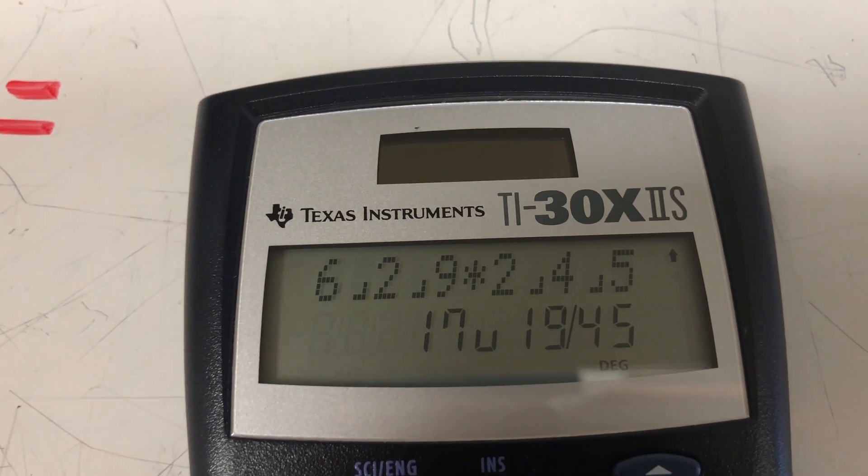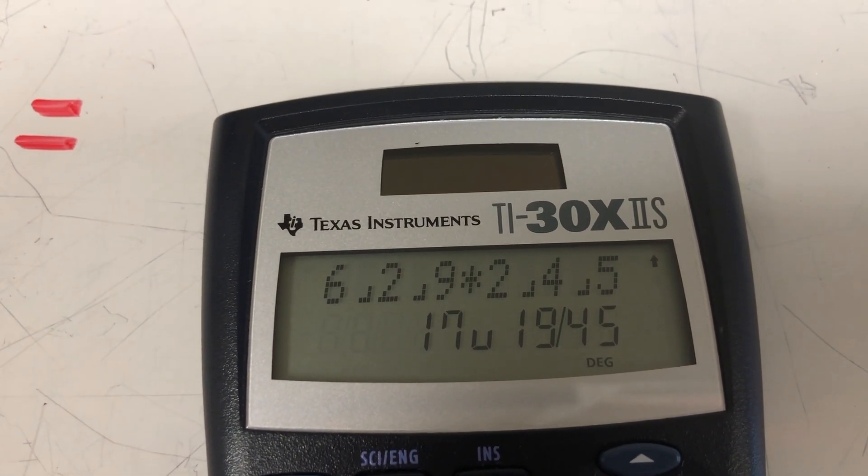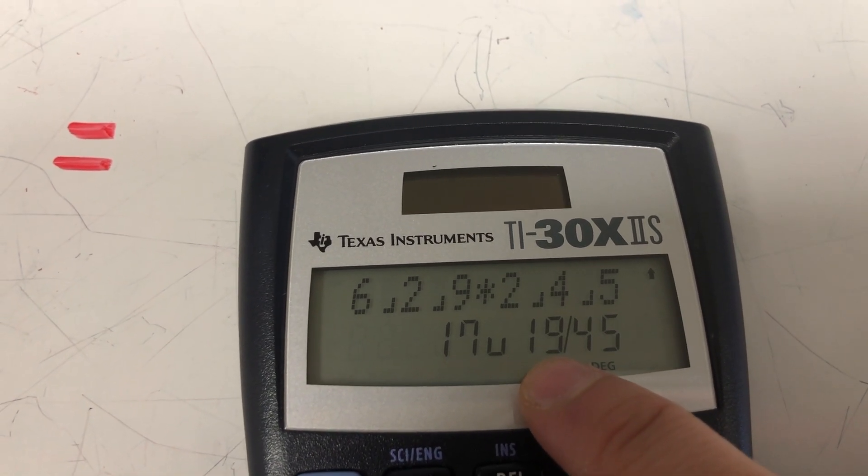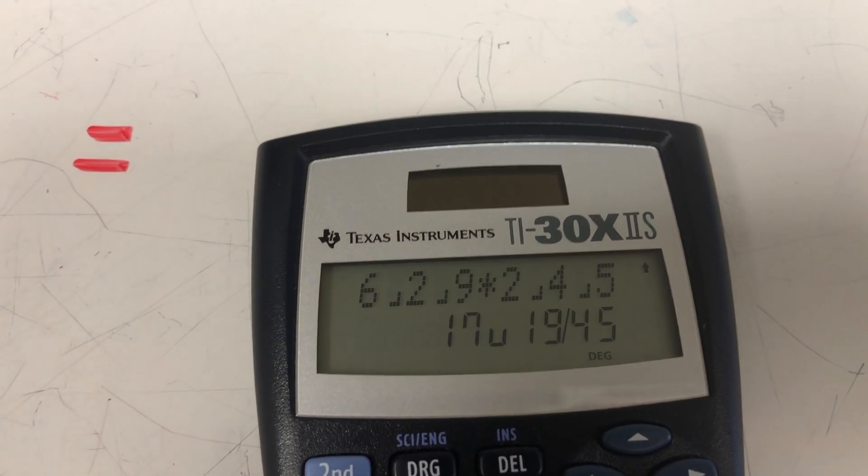And the formatting when we get an answer for this might look a little bit goofy. It says 17, then there's a U. That's a space that's separating our whole number from our fraction. So this is 17 and 19 forty-fifths. And that would be our final answer for this question.